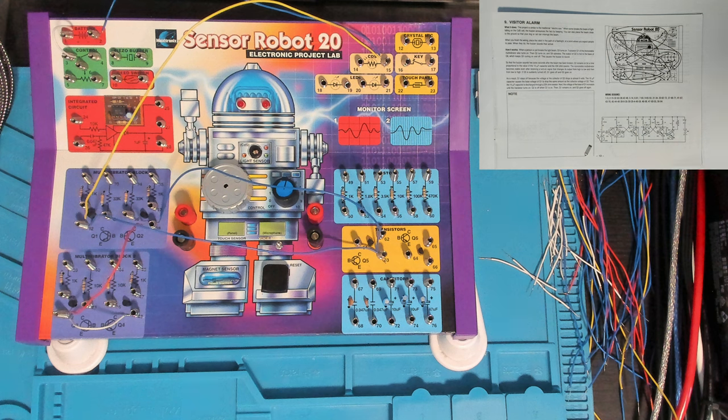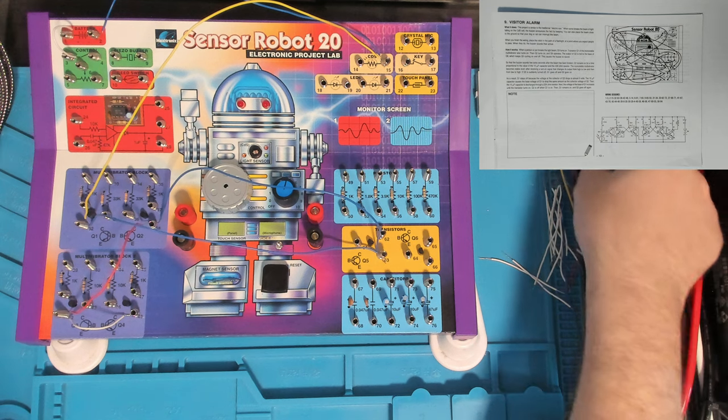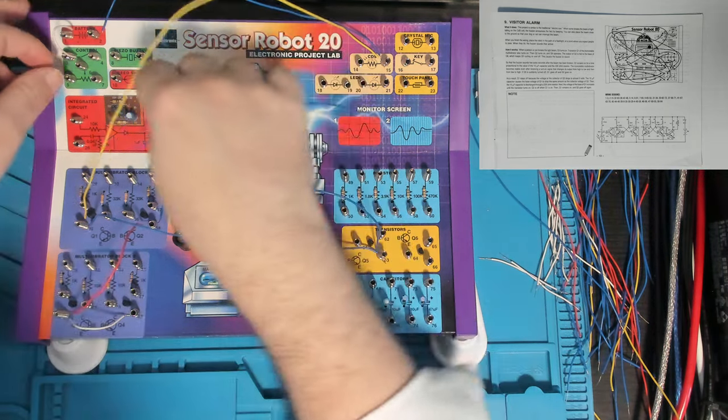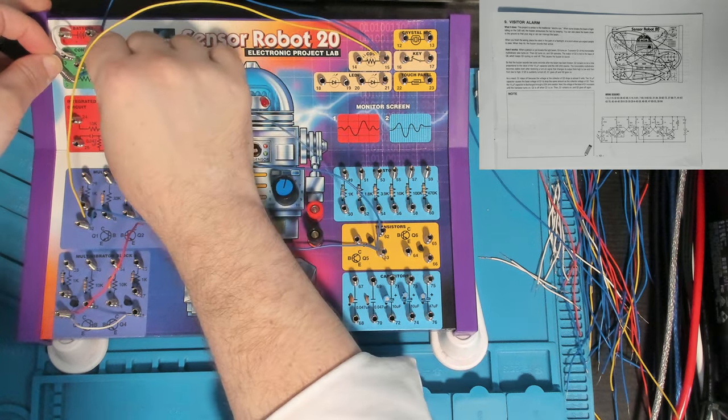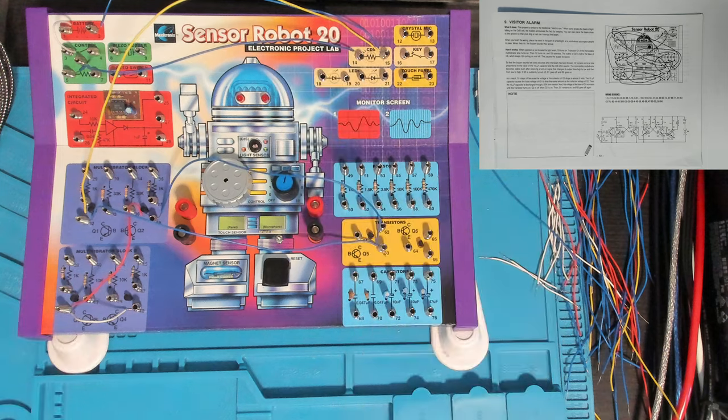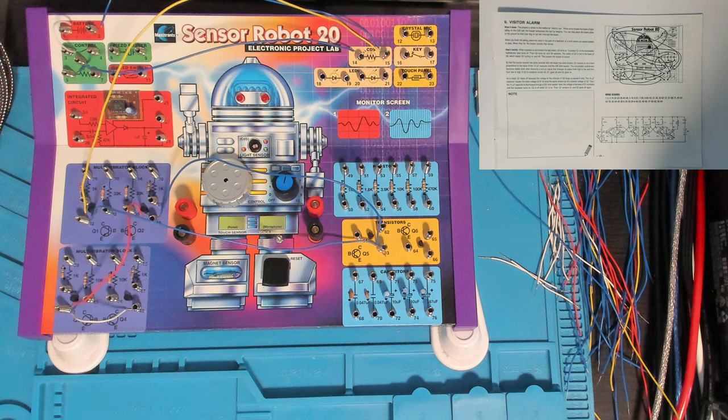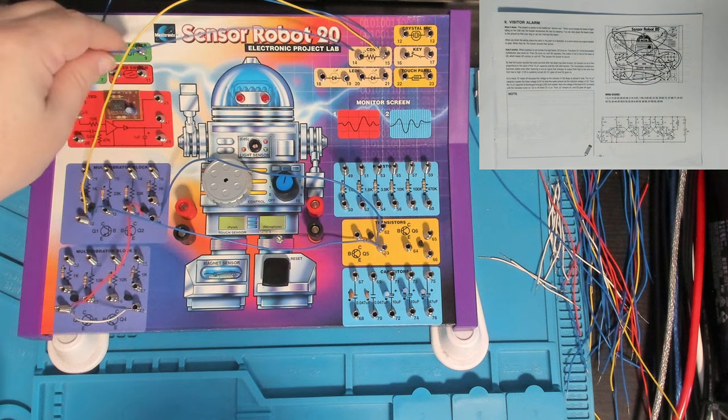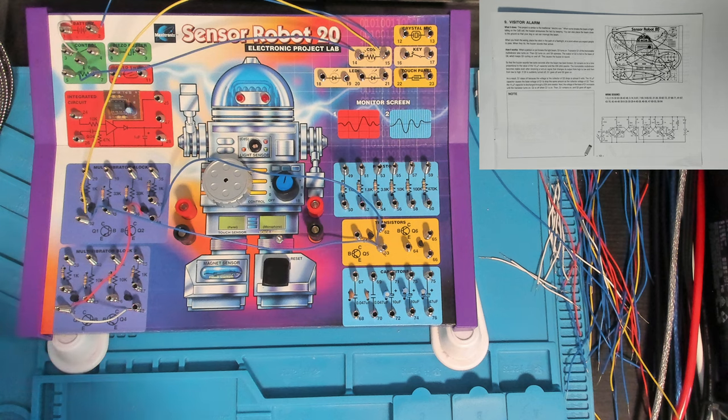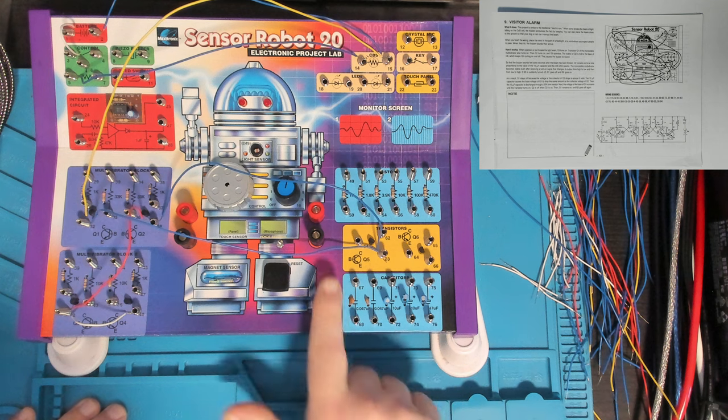Next we connect 5 to 14. Five is one side of our variable resistor, called a potentiometer. Our potentiometer seems to be in use in this circuit as part of the tuning. And then 6 to 61, which is the base of Q5. Six is what they call the wiper, the middle part of the potentiometer.